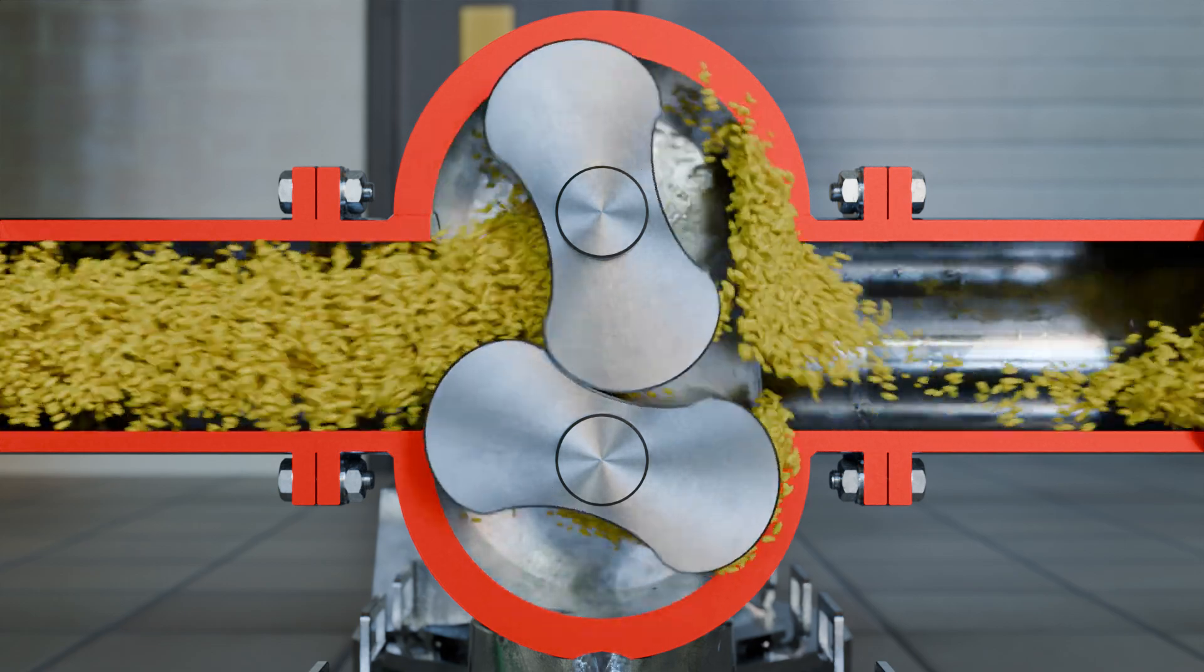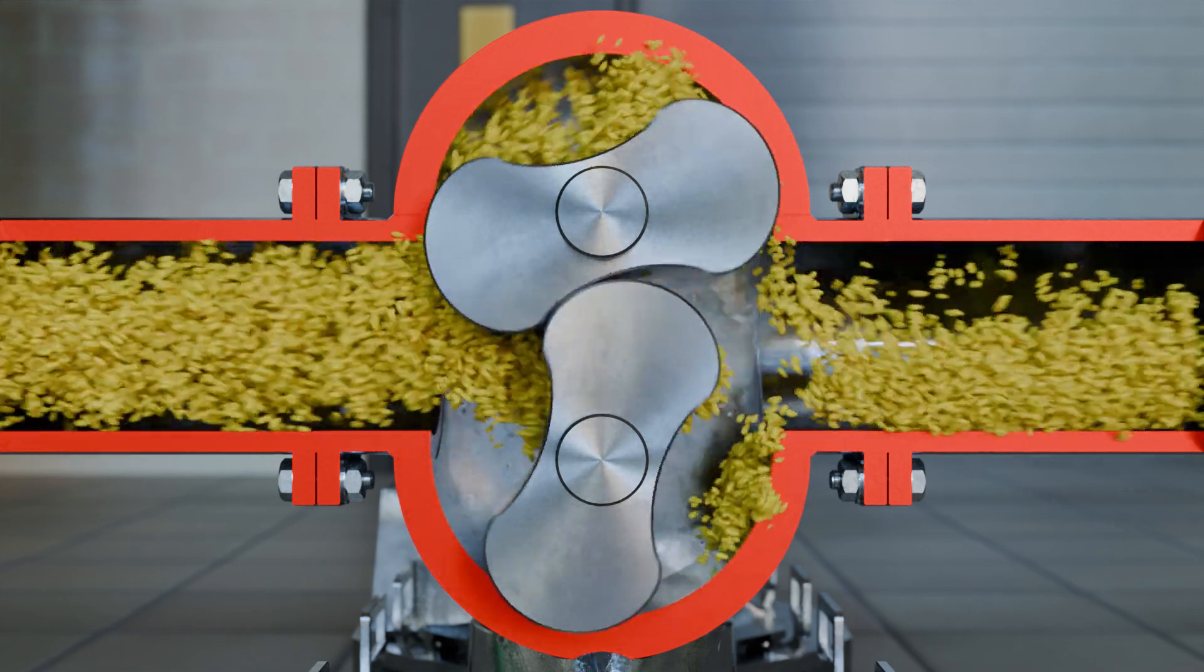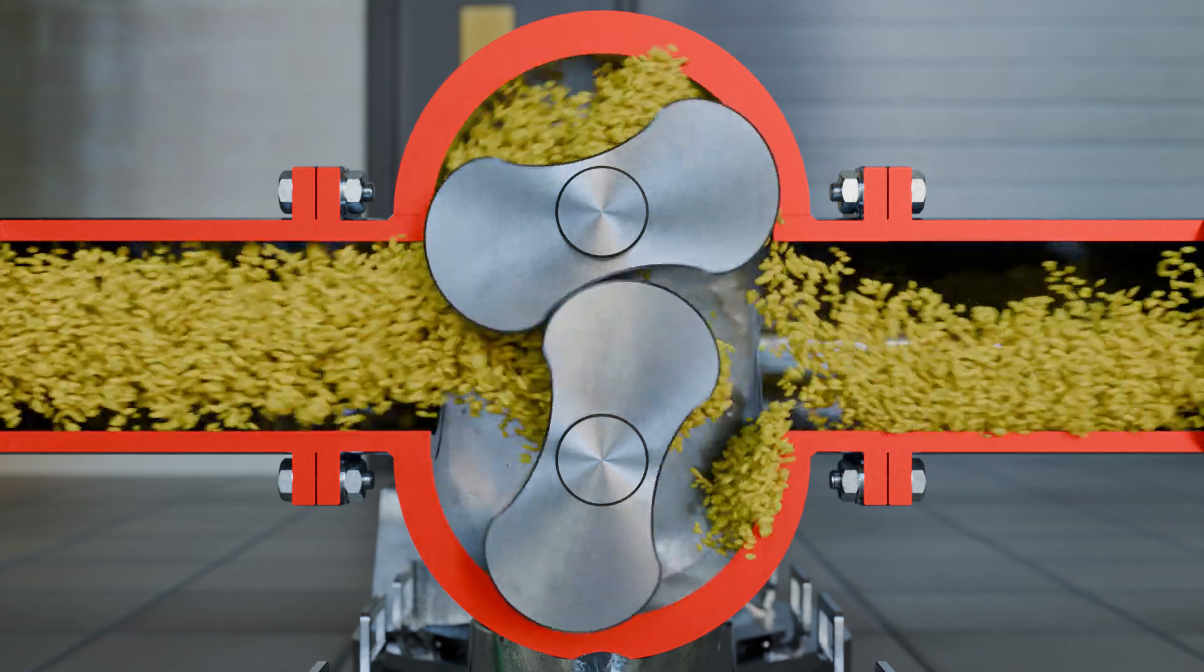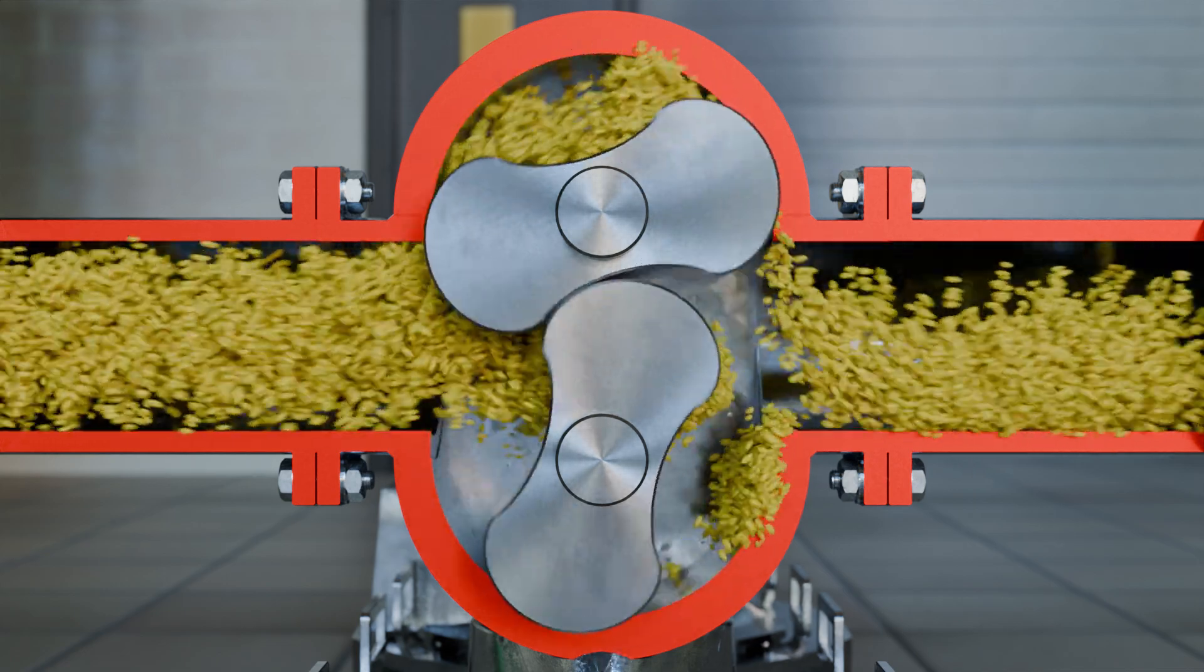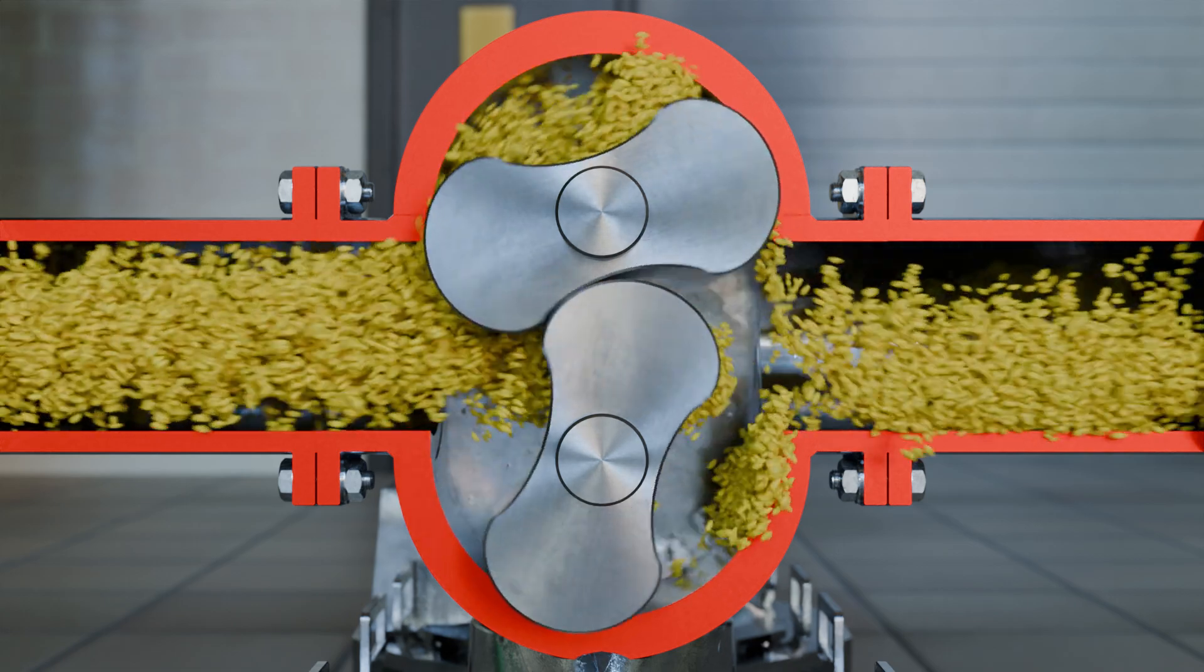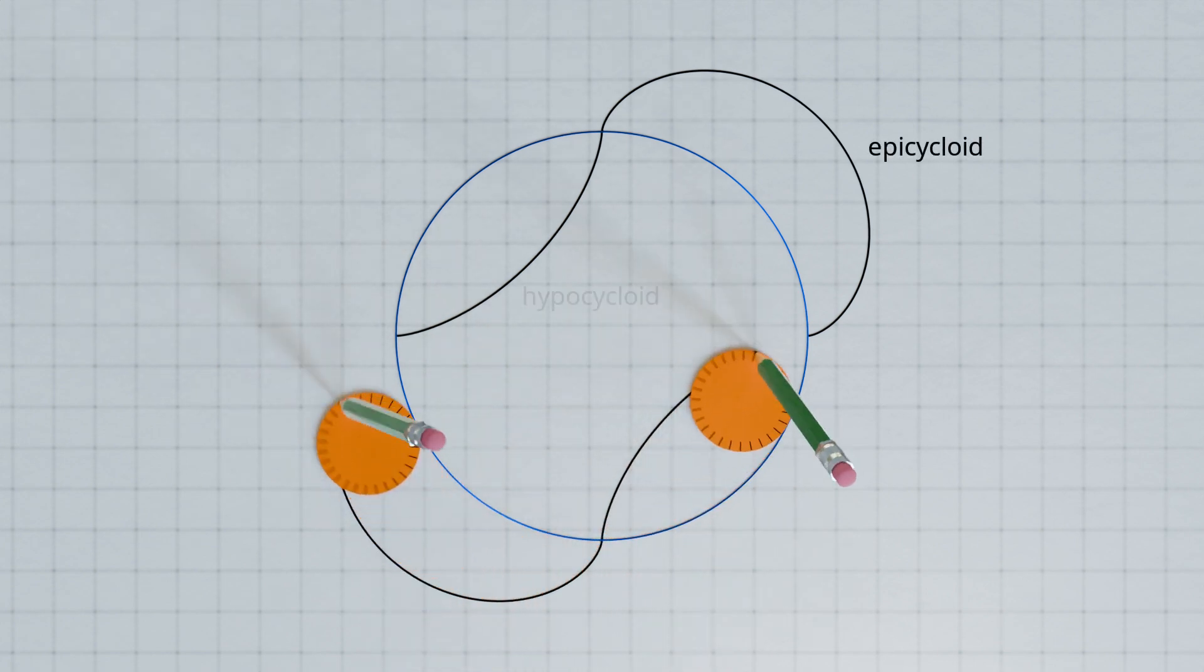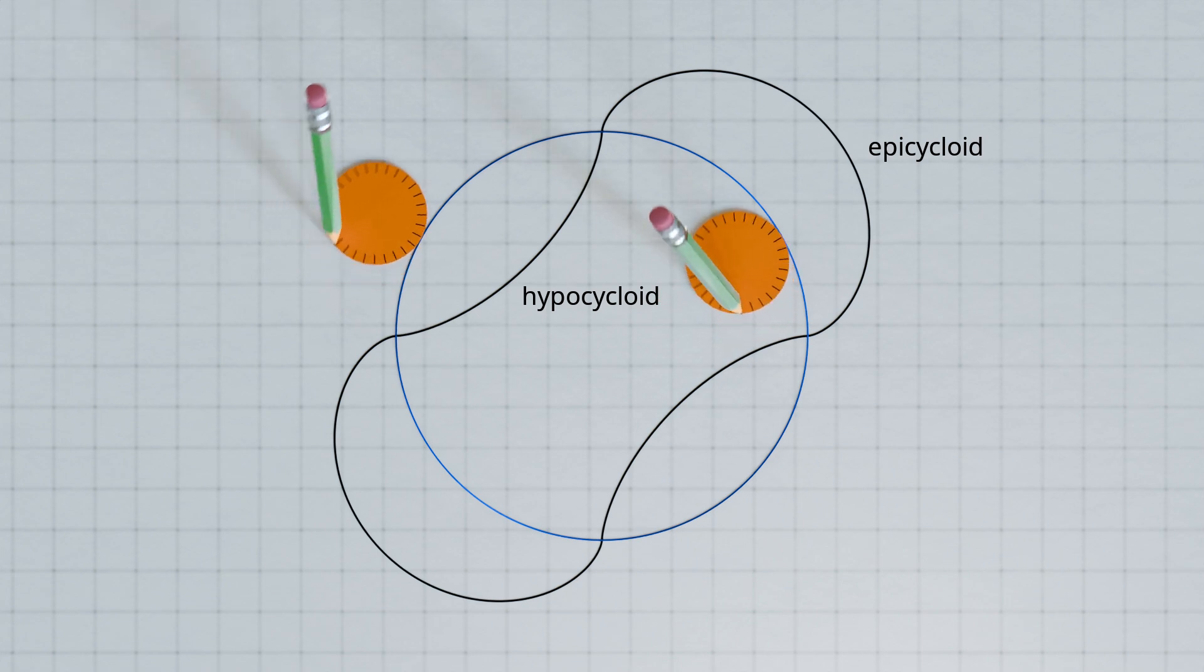The shape of the vanes is considered in more detail in the following. These are made up of cycloids and therefore correspond in principle to cycloidal gears. However, as mentioned earlier, there is no power transmission between the vanes as there is in conventional gears. To construct the cycloidal rotor shape, two equal-sized rolling circles are rolled on a base circle. The diameter of the base circle is four times the diameter of the rolling circles. Rolling on the outside of the base circle gives an epicycloid. Rolling on the inside gives a hypocycloid.